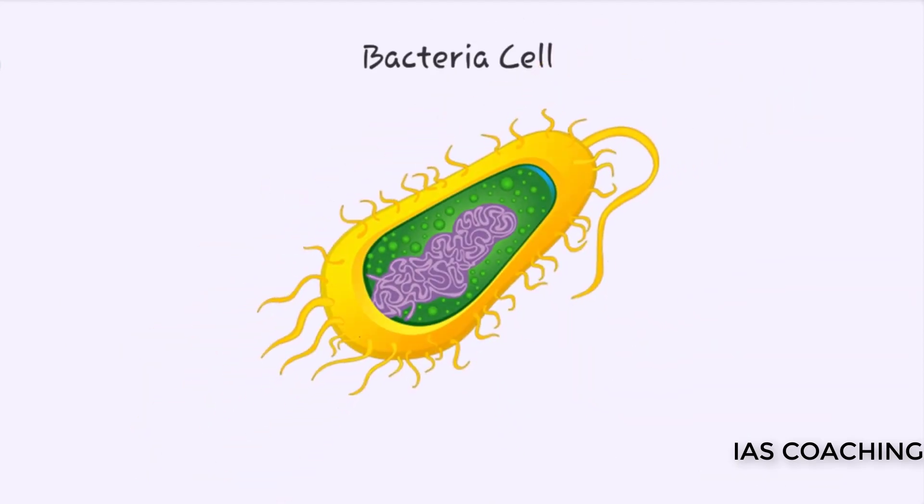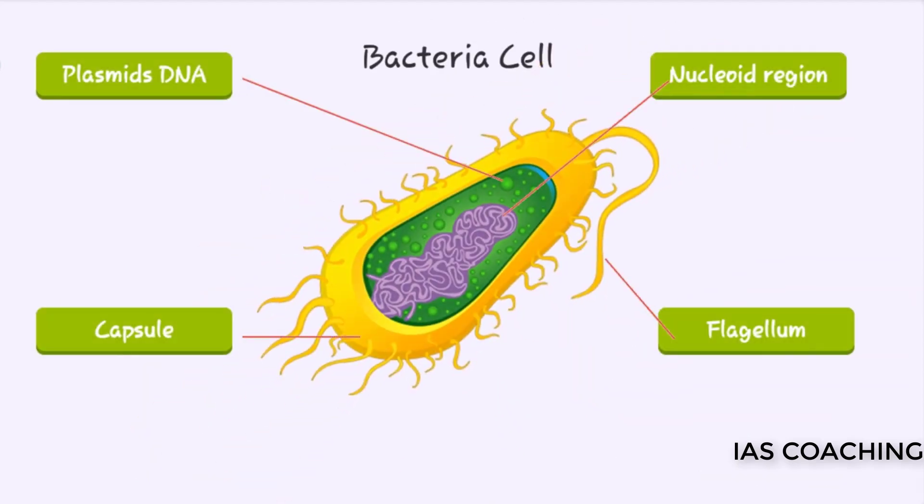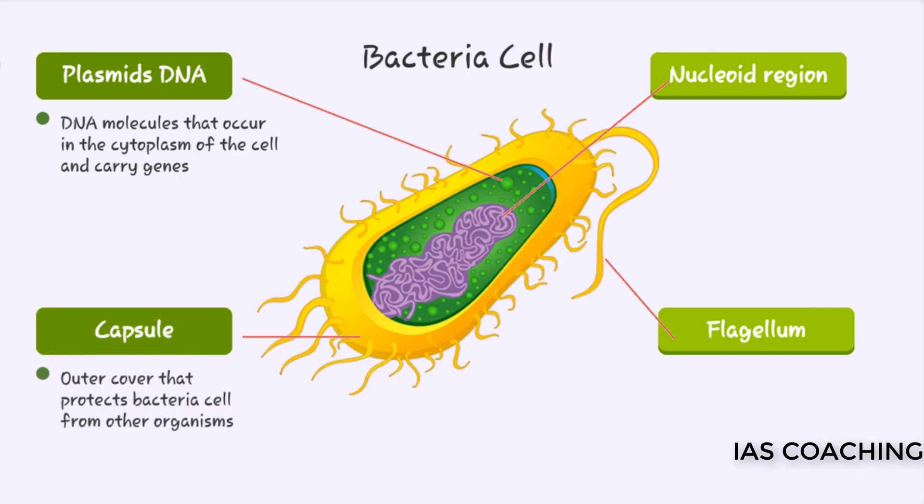Prokaryotic cells such as bacteria have some unique organelles besides cell wall, cell membrane, ribosomes and cytoplasm. Plasmids are DNA molecules that occur in the cytoplasm of the cell and carry genes. The capsule is an additional outer cover that protects the bacteria cell from other organisms. The nucleoid region is the equivalent of the nucleus in eukaryotic cells. It contains the genetic material.